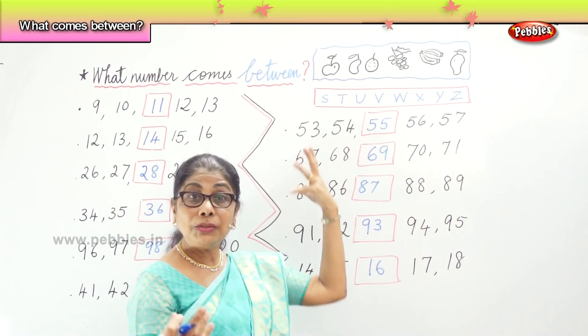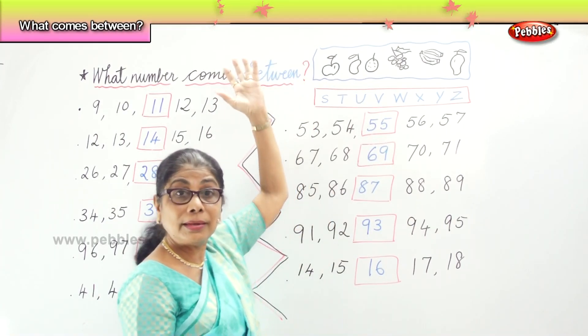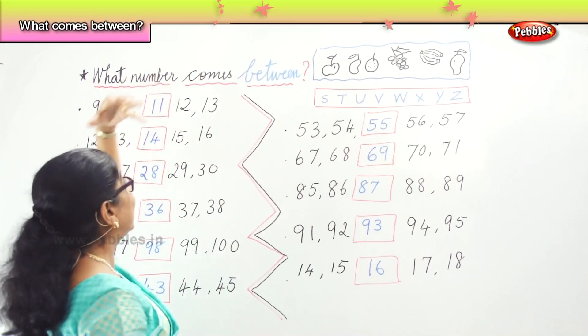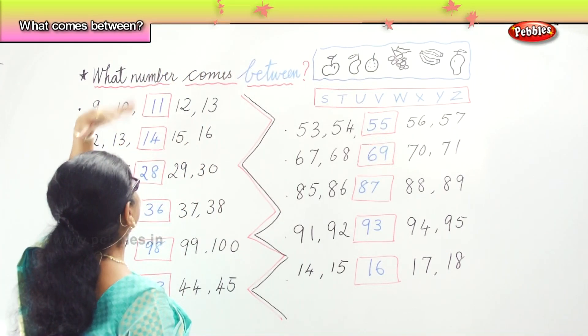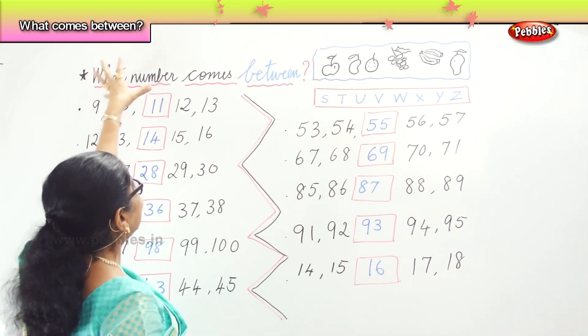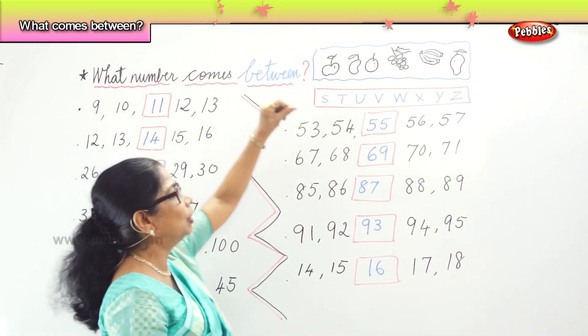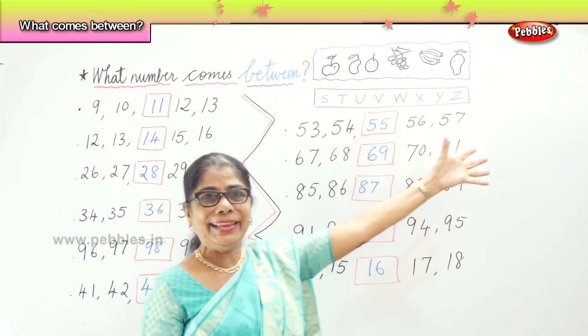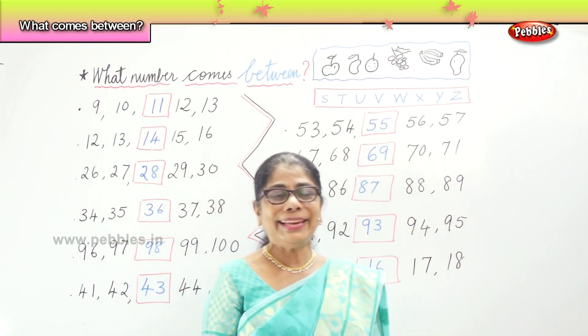So we learnt to write, count in our mind, and say what number comes between. And we did it.